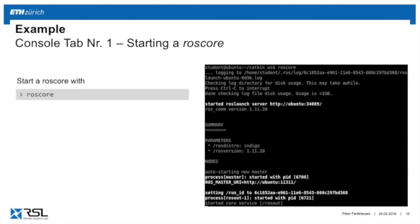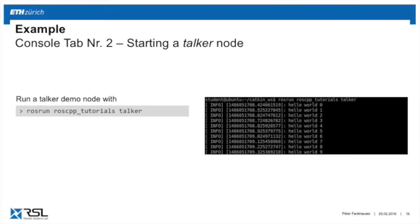Open a second tab or split the window. In this console we're going to run a talker node, which is a pre-installed tutorial. Type rosrun to start the node, then roscpp_tutorials as the package name, and then talker for the node name. Once this node is running you should see it printing 'Hello World 0' with an increasing number — essentially this node outputs this message to the console.